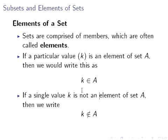Now, if a single value k is not an element of A, then we would write k is not an element of A. That symbol just gets a line through it, that element symbol or in symbol. So k is an element of A.